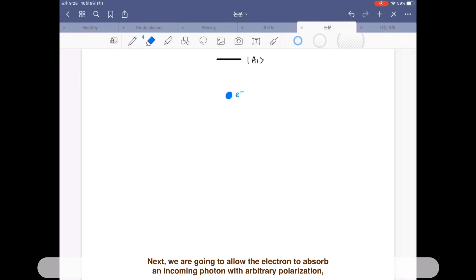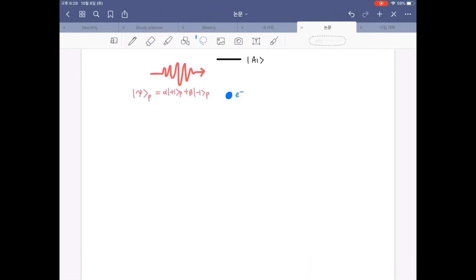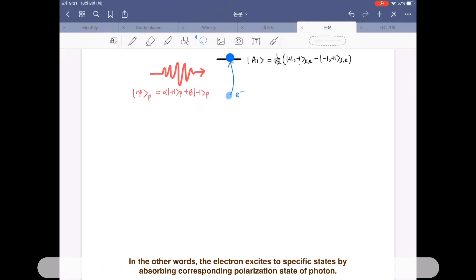Next, we are going to allow the electron to absorb an incoming photon with arbitrary polarization, which excites the electron into another spin-orbit correlated eigenstate A1. In other words, the electron excites to specific states by absorbing corresponding polarization state of photon.